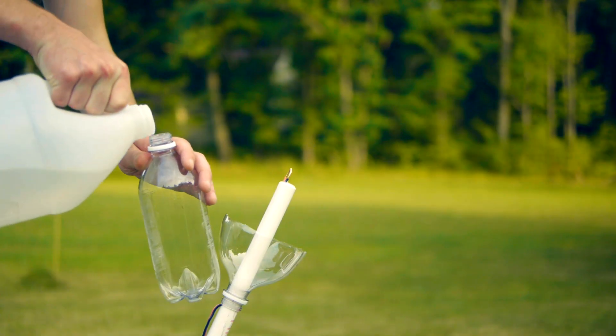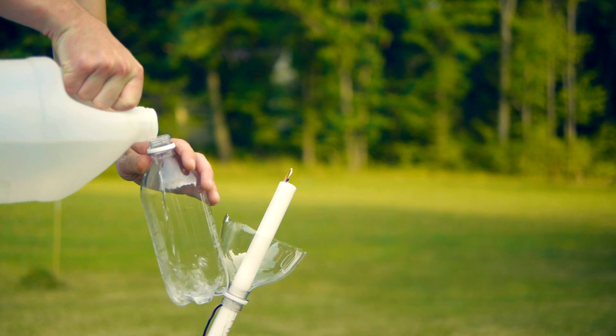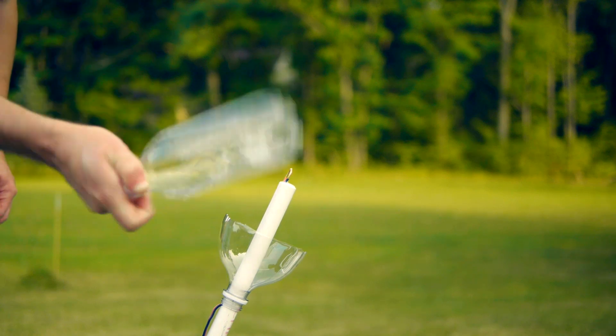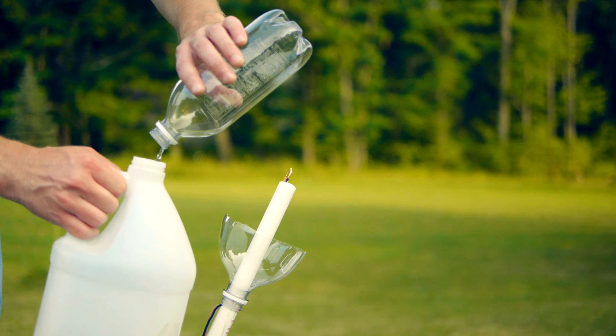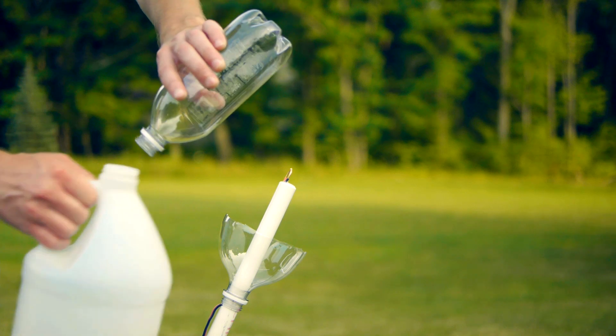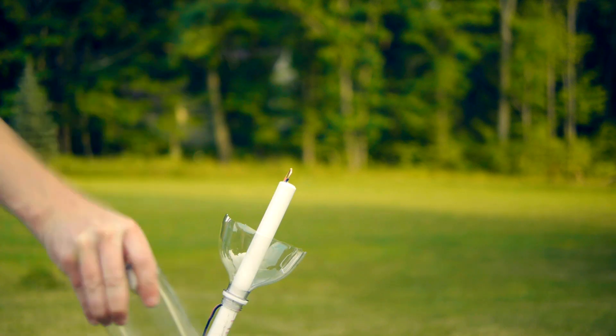To fuel the rockets, some isopropyl rubbing alcohol is poured into a soda bottle and shaken a few times to build up the vapor. The liquid is then poured back out since only the vapor acts as fuel. The last few drops are shaken out with a few quick swings of the bottle.